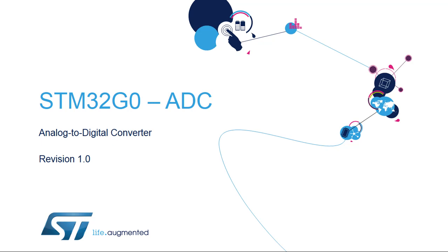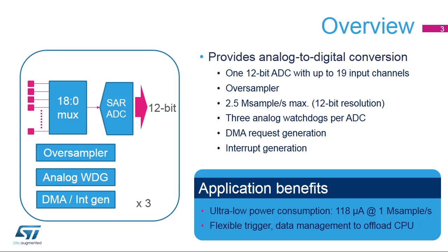Hello and welcome to this presentation of the STM32 analog to digital converter block. It will cover the main features of this block, which is used to convert the external analog voltage-like sensor outputs to digital values for further processing in the digital domain. The analog to digital converter inside the STM32G0 microcontroller allows the microcontroller to accept an analog value, like from a sensor output, and convert the signal for use in the digital domain.